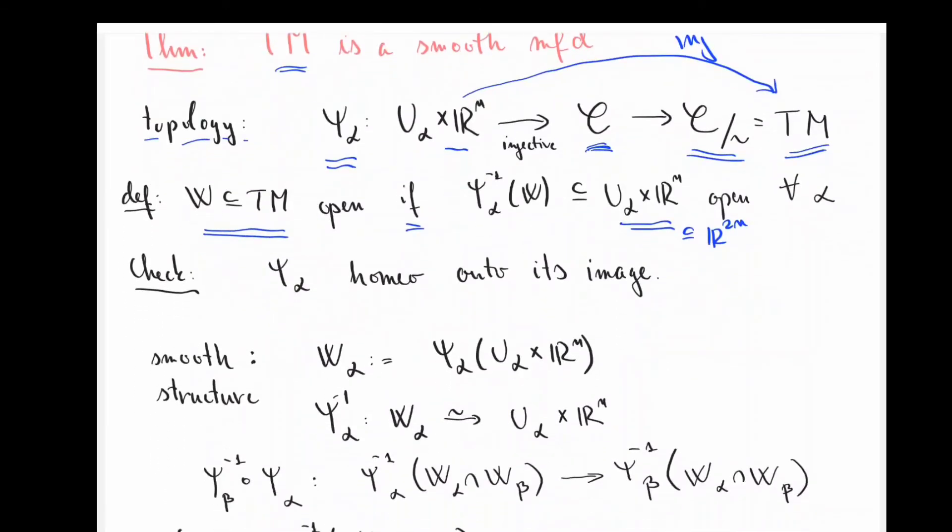Now, it's not difficult to check, based on how things are set up, that psi alpha is a homeomorphism onto its image. So at the very least, we have produced a topological manifold at this part where the charts are these maps psi alpha. Now, what needs to be checked is that these charts give me a smooth structure, meaning that the transition maps are actual smooth maps.